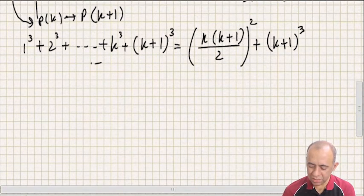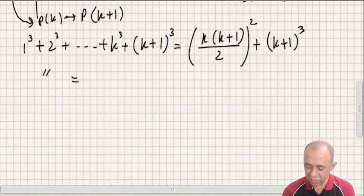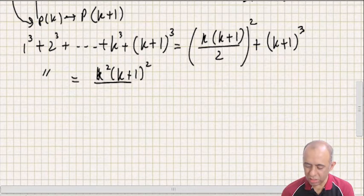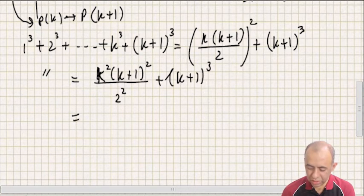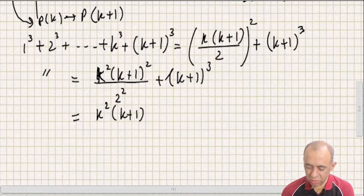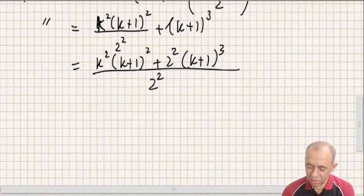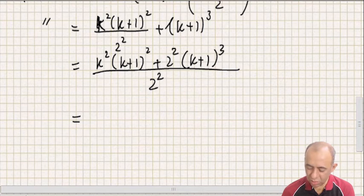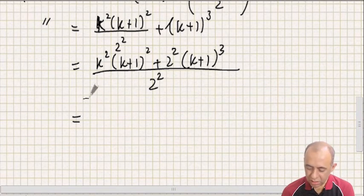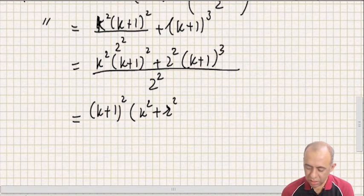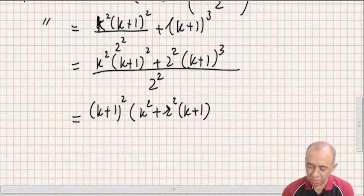We work on the right-hand side. We write k²(k+1)² / 2², then take LCM: [k²(k+1)² + 2²(k+1)³] / 2². We can factor out (k+1)² common from both terms, giving (k+1)² × [k² + 2²(k+1)] / 2².